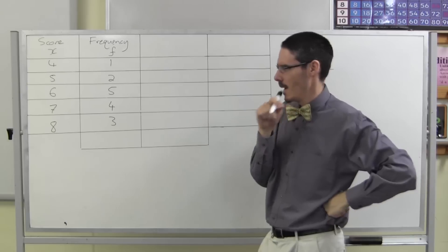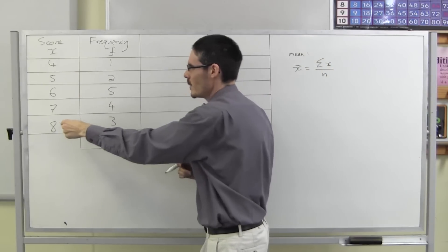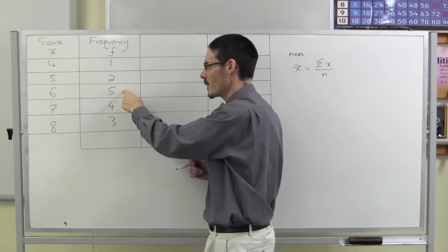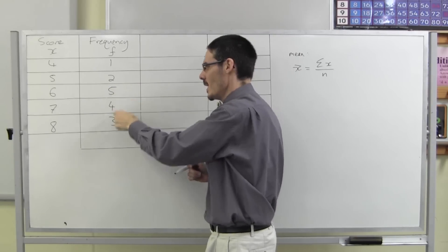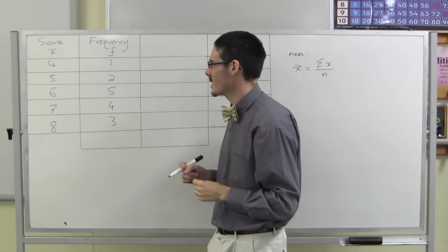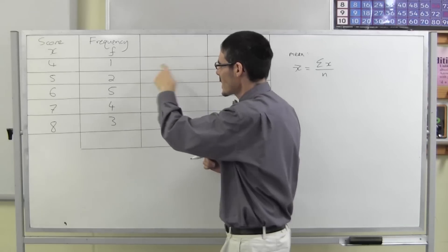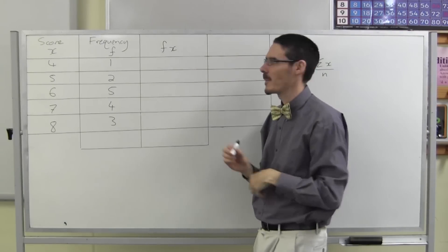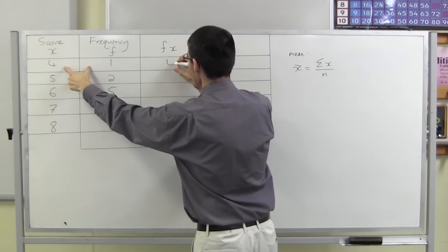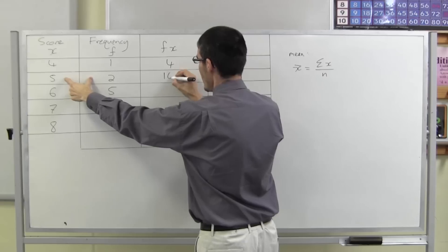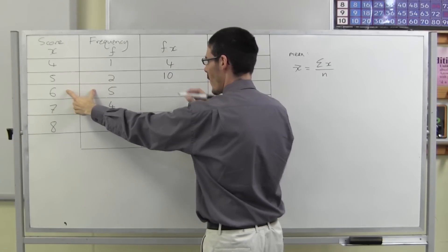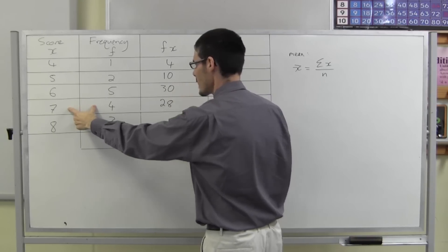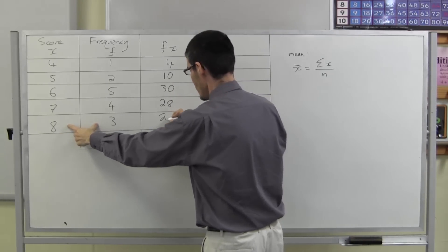And how many scores are there? Well, there are 15 — because there's one four, but there's two fives making three, and then five sixes making eight, and so on. So: frequency times score gives us — one four is 4, two fives is 10, five sixes is 30, four sevens is 28, and three eights is 24.